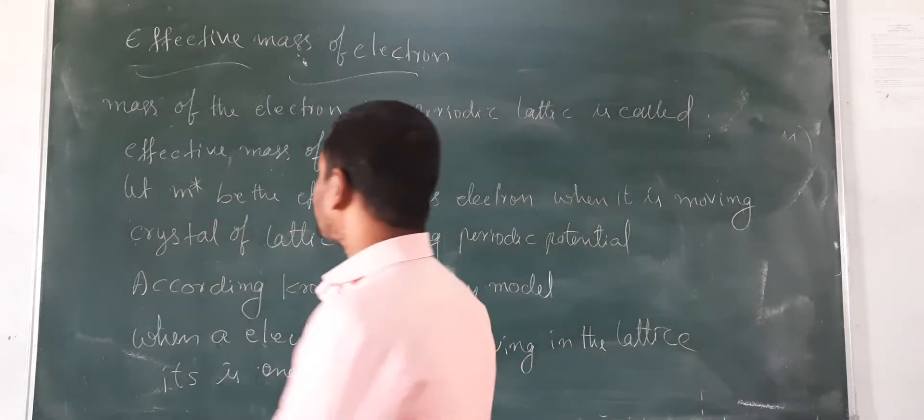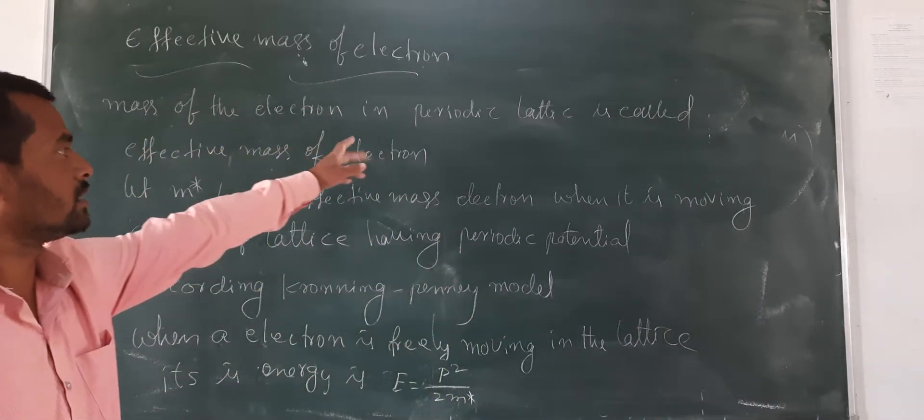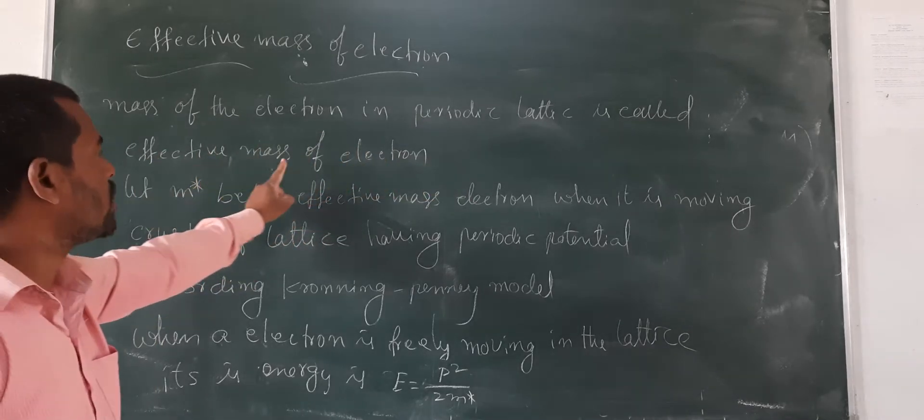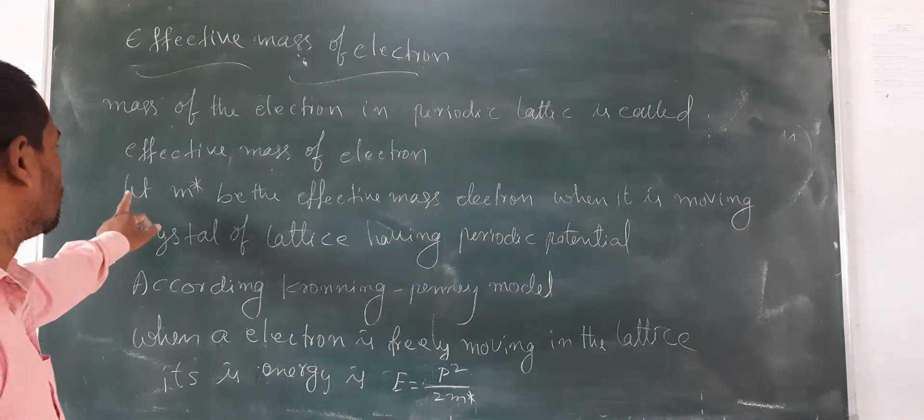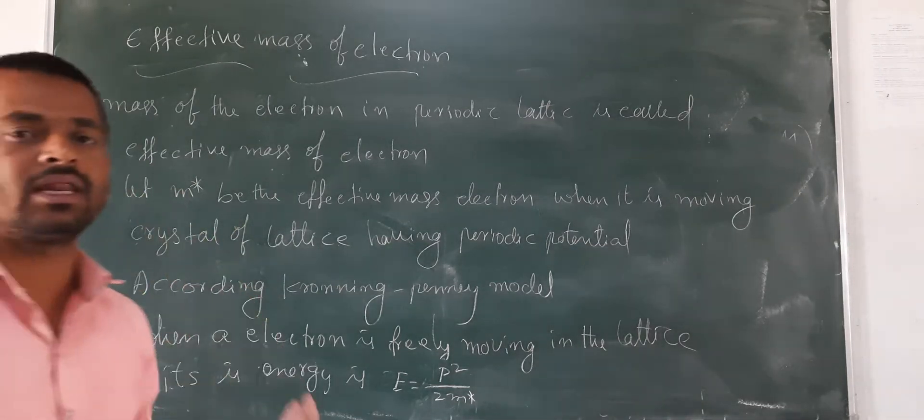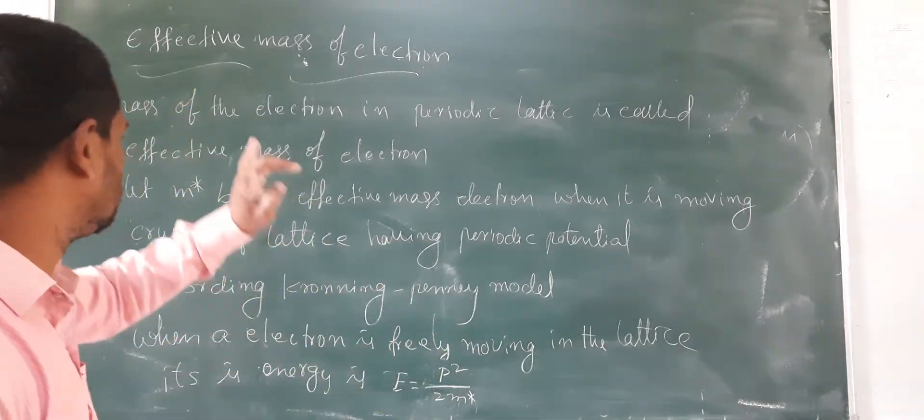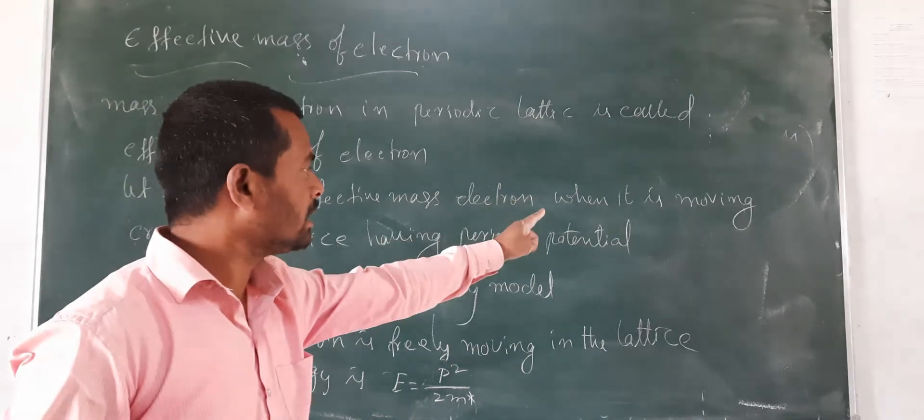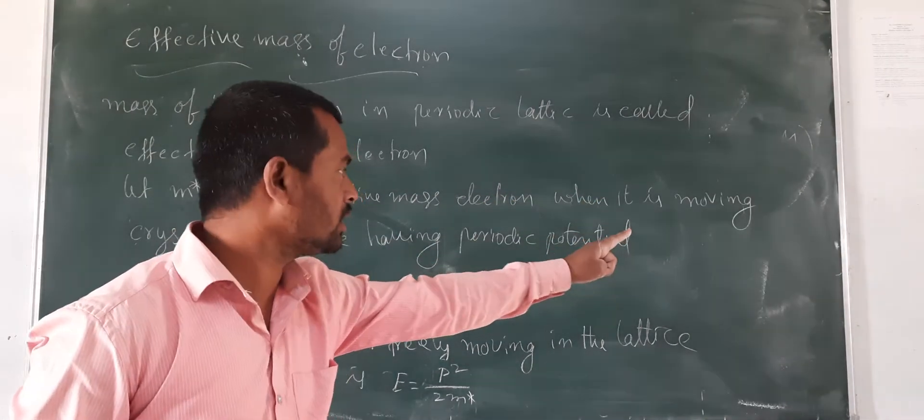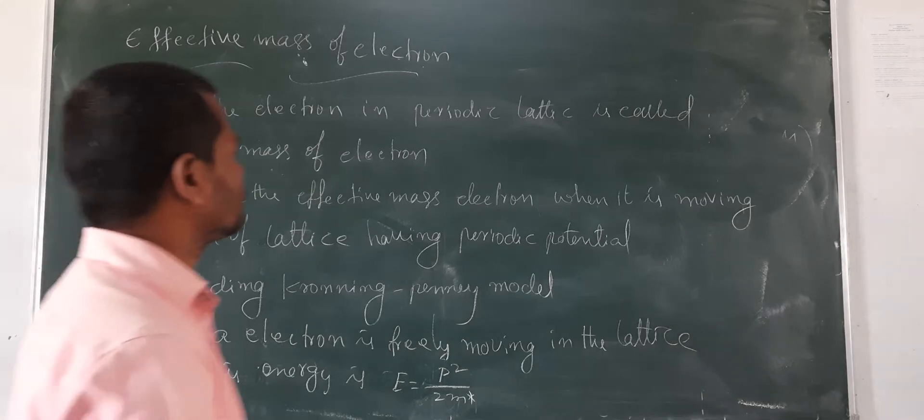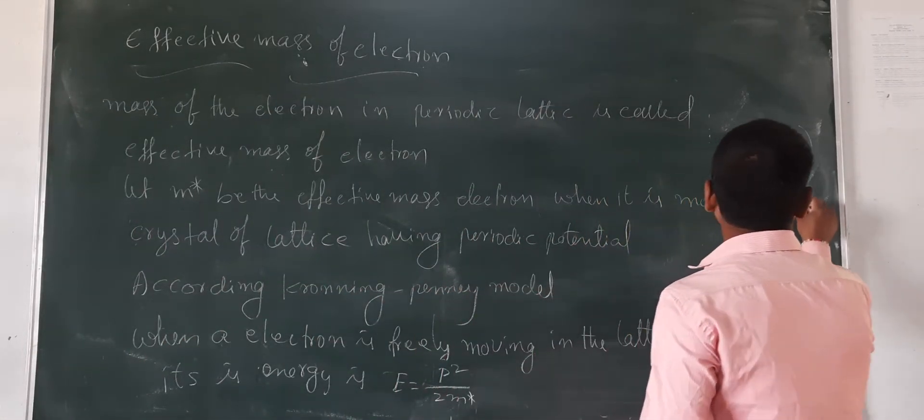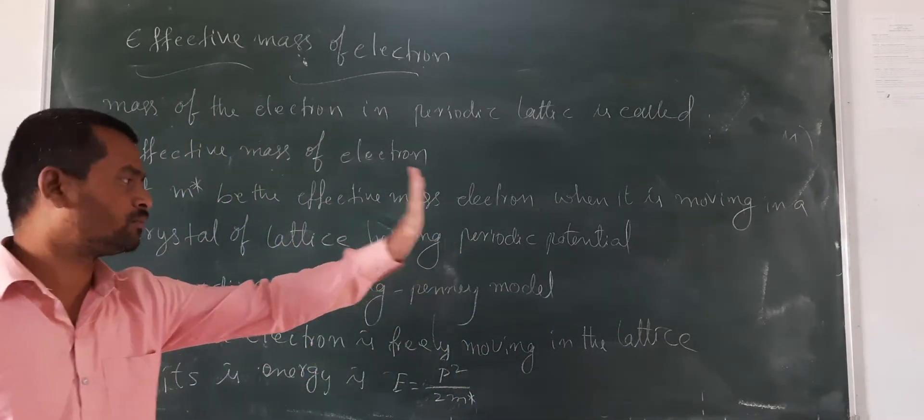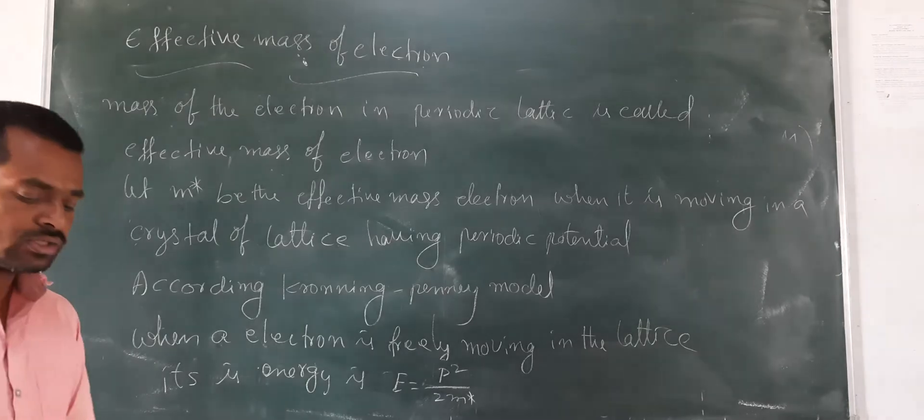Now check it here. Mass of electron in periodic lattice is called effective mass of electron, right? And let m star be the effective mass of electron where it is moving in a crystal of lattice having periodic potential.